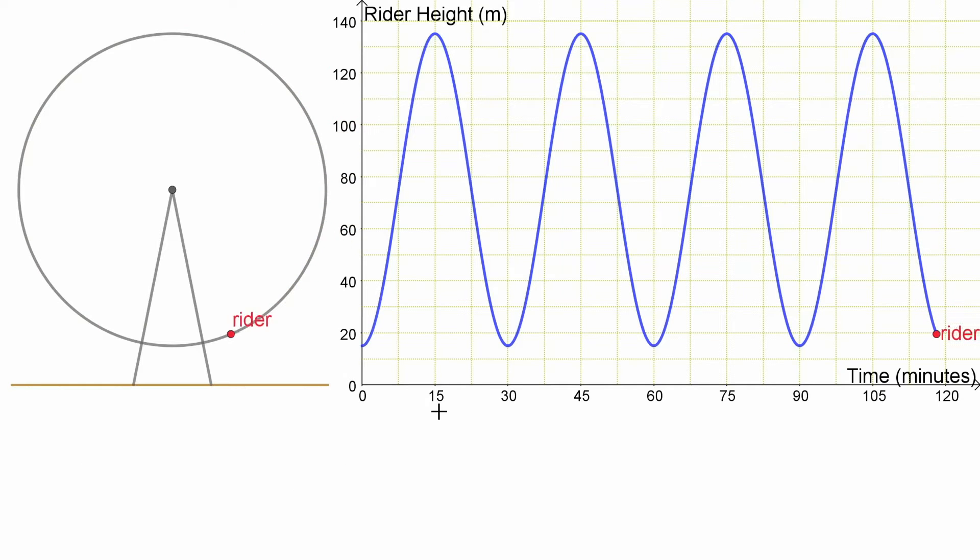So you see that every 30 minutes they get back to where they started, because it takes one 30 minute period to go all the way around once. You see that the maximum height they ever get to is that 135 and the minimum they come back to every time is 15 meters there.